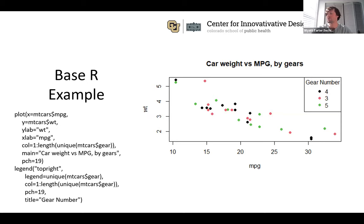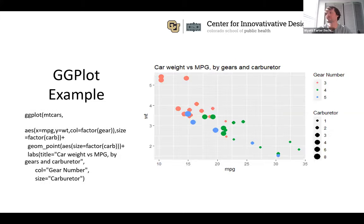Here's a more advanced base R scatter plot where I've added coloring by gear number using the `col` argument, then manually added a legend. You can see it takes quite a bit of code to create, and the result is still kind of hard to follow.